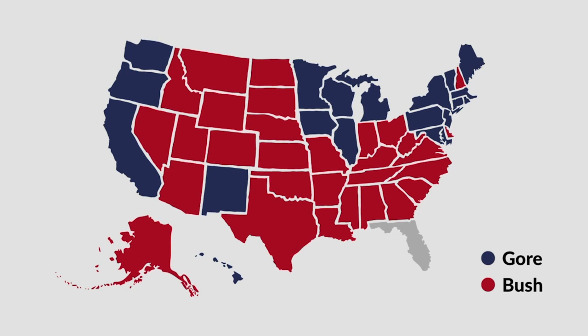The electoral map was such that without Florida's 25 electoral votes, neither candidate could attain the 270 electoral votes needed to secure the presidency. Thus, whoever won the Florida election would also win the national election.